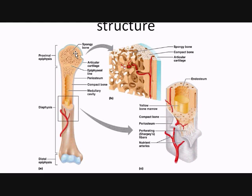Let's talk about the spongy bone area. This is rich in red bone marrow, which means you're going to have a huge supply of red blood cells created here — blood cells in general. In adults, production of red blood cells occurs in the red bone marrow, so this is a rich source for red blood cells.